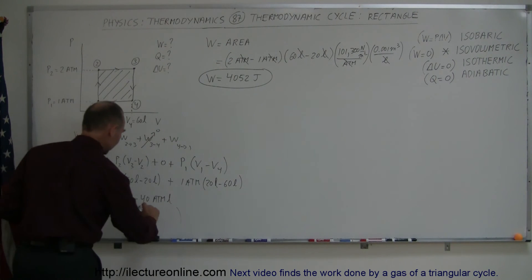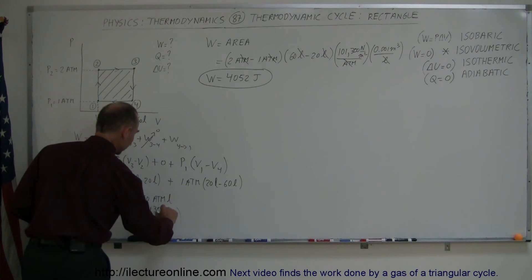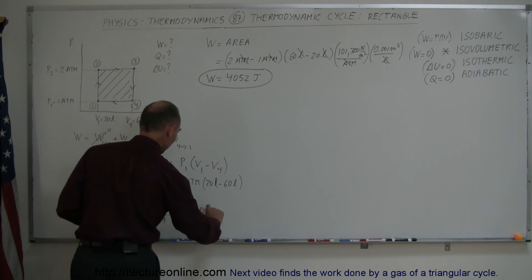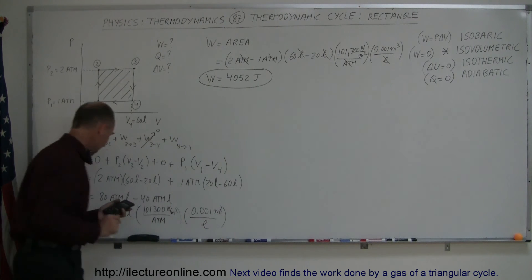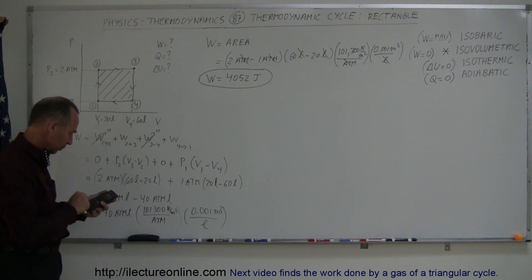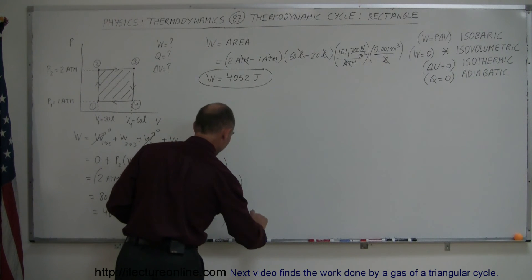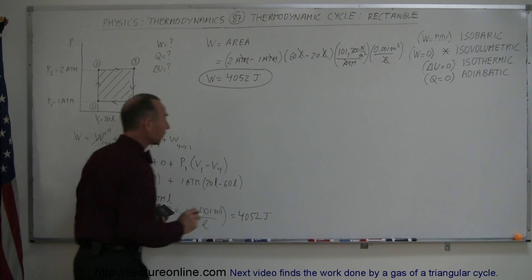And of course, then we have to multiply this times 101,300 newtons per square meter per atmosphere, and 0.001 meter cubed divided by liters. And when we work that one out, it looks like 101,300 times 40 divided by 1,000 equals, and yes, we get the same, 4,052 joules.